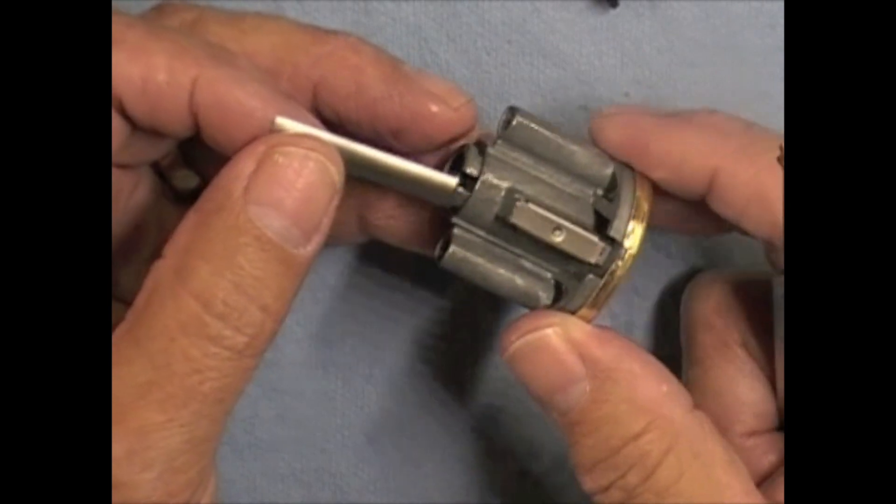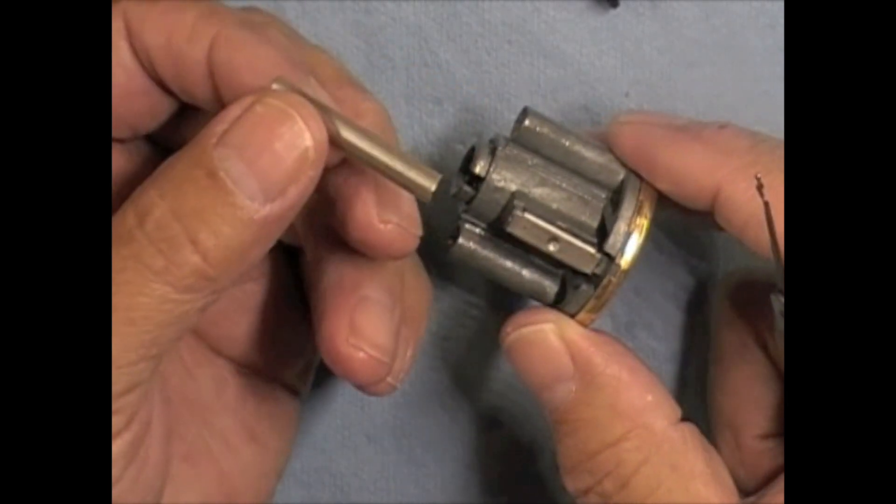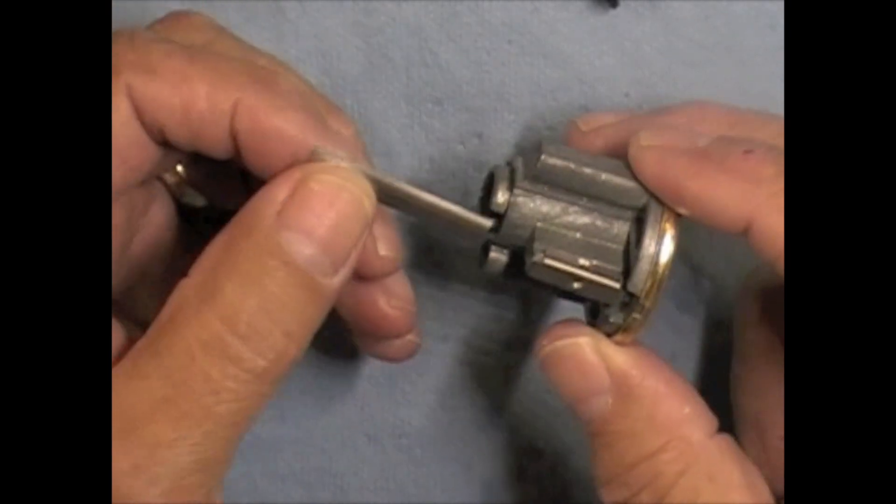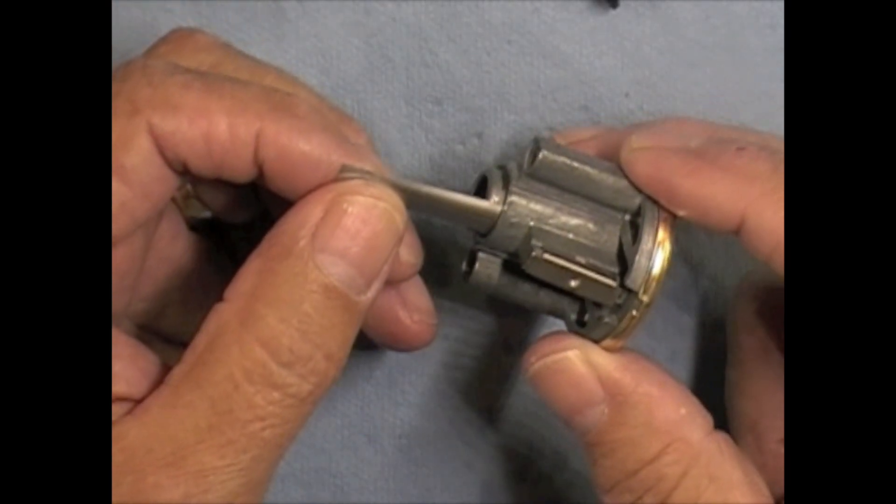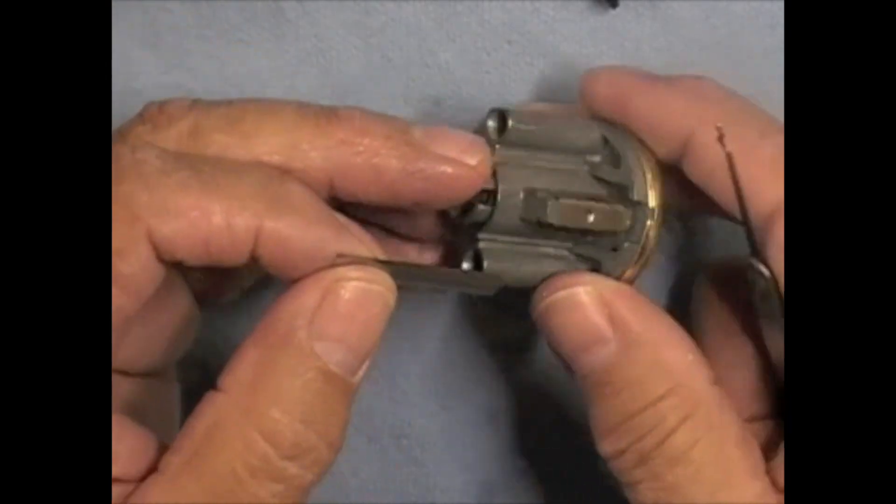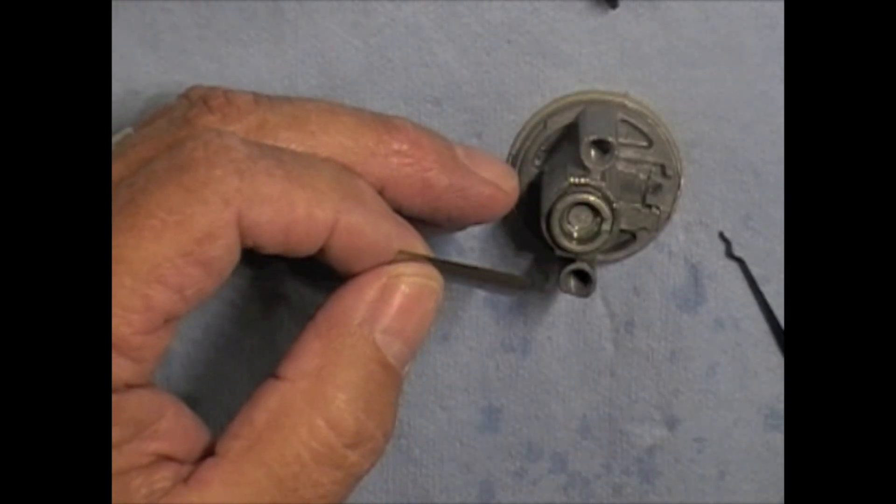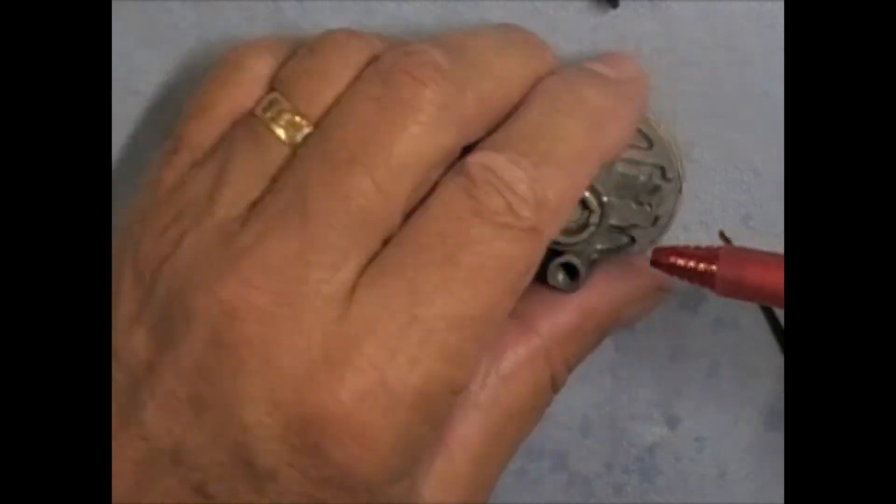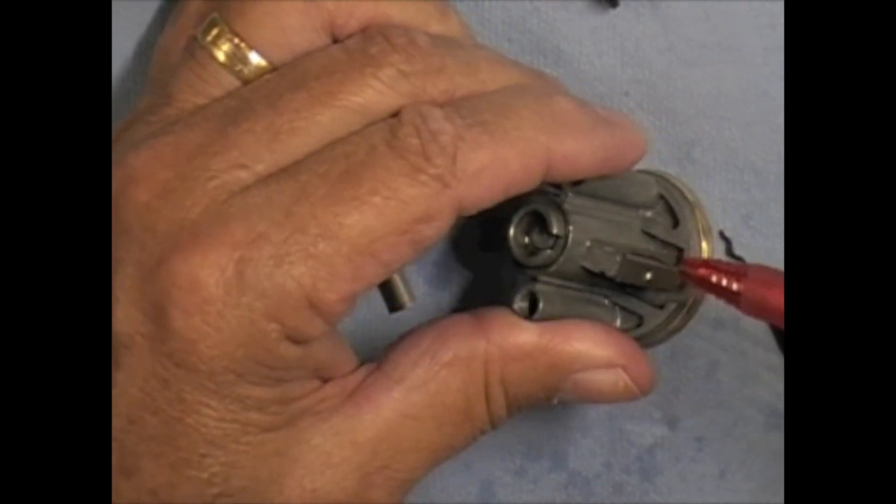Okay, so to shim the lock, we take our shim stock which is just a very thin piece of foil that's slightly curved to match the curvature of the plug. We push it in, back of the plug, right here, right behind the pin stacks.